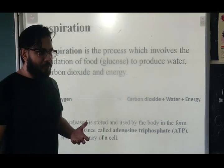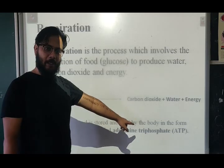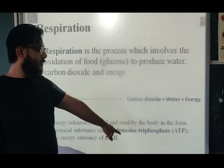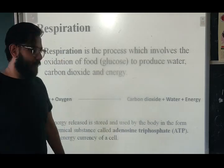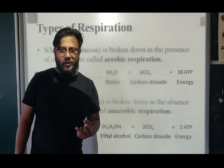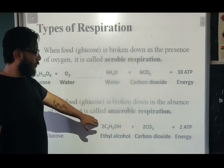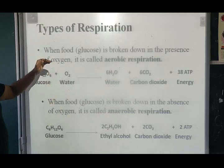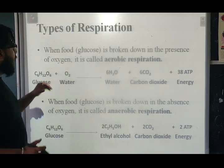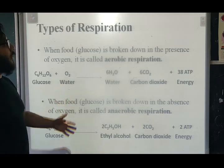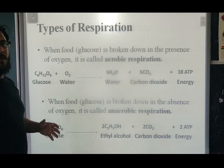The energy released in the body is known as adenosine triphosphate, or ATP. There are two types of respiration: aerobic respiration and anaerobic respiration. When glucose is broken down in the presence of oxygen, it is called aerobic respiration.